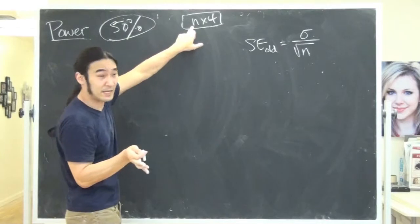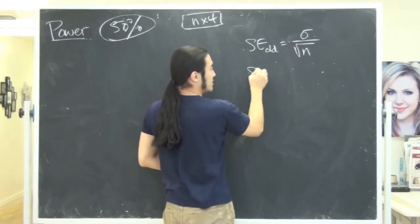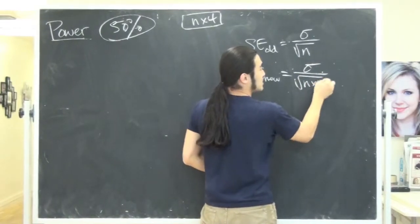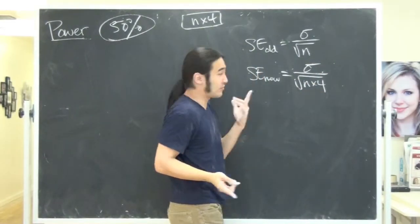Let's look what happens when you quadruple the sample size. Well, you can already tell me this new standard error is going to be sigma over n times 4, right? Just like the problem we did before.